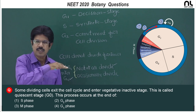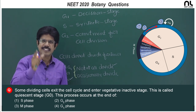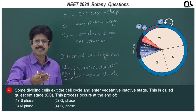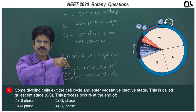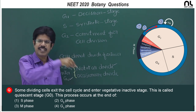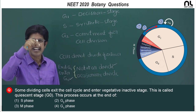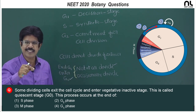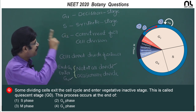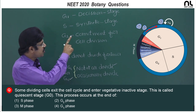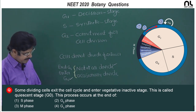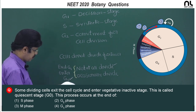G naught is not a termination stage — it is a suspended stage. Whenever there is a requirement for cells, it exits G naught and enters G1. When there is no requirement for division, it exits G1 and enters G naught. G1 is the decision stage, and every cell must enter G1. As shown in the diagrammatic representation, it exits G1 to enter G naught. Therefore, the correct option is the fourth option.